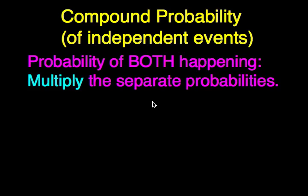Hello. In this video, we're going to continue our study of compound probability. And again, we're not going to cover dependent events, we're just covering independent events, which means one event has nothing to do with the outcome of another event, such as flipping coins or rolling dice, things of that nature. And to review, the probability of both items, both events happening, to find the probability, we multiply the separate probabilities.